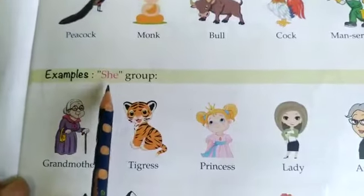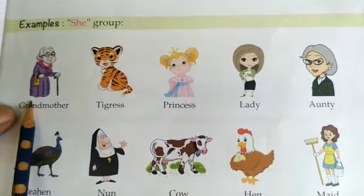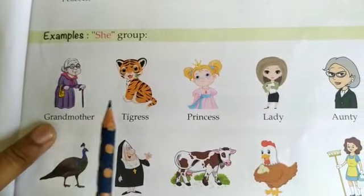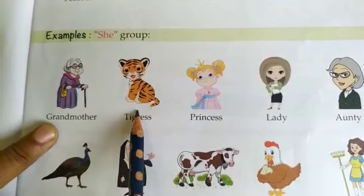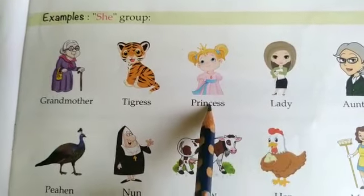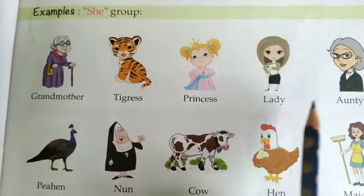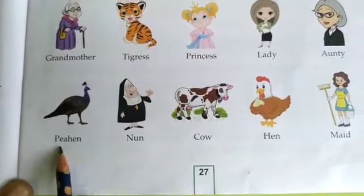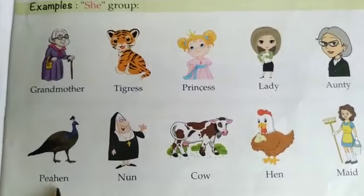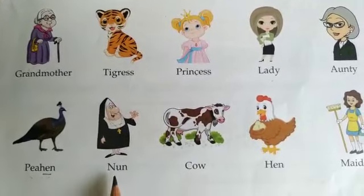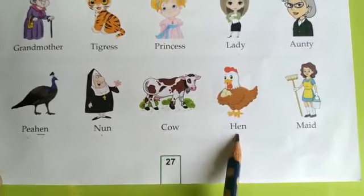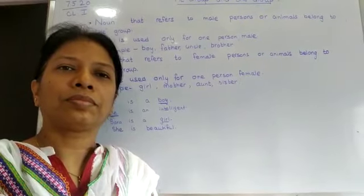Now let us see the she group. Grandmother — grandfather was in he group, grandmother is in she group. Tiger is he group; tigress is she group. Then she group: princess, lady, auntie. Peacock was in he group; peahen is in she group. Nun, cow, hen, maid — these are all in the she group.